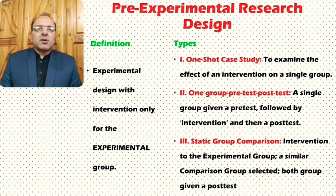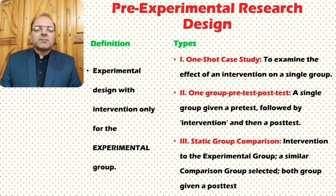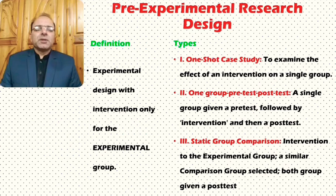The first sub-type is called the one-shot case study design. Here, we examine the effect of an intervention on a single group. For example, in educational research, you might take a single class and give them a particular teaching method as an experimental treatment, then evaluate the effect of that teaching method in terms of learning outcomes.